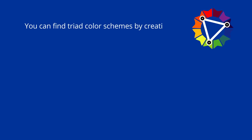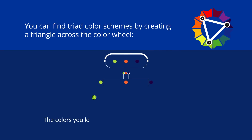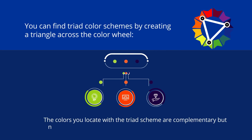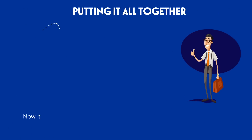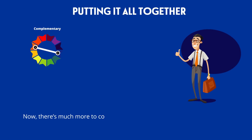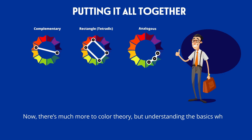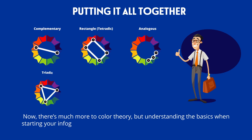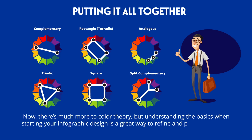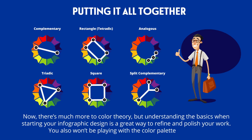You can find triad color schemes by creating a triangle across the color wheel. The colors you locate with a triad scheme are complementary, but not too close together, which makes for a very harmonious look. Now there's much more to color theory, but understanding the basics when starting your infographic design is a great way to refine and polish your work. You also won't be playing with the color palette for hours.